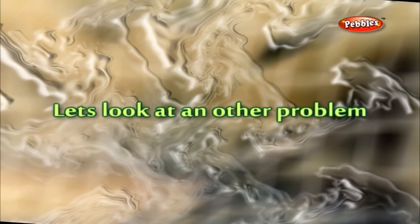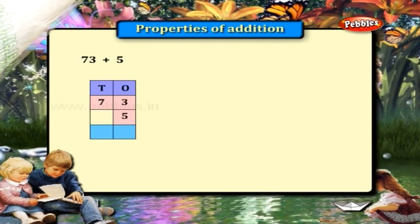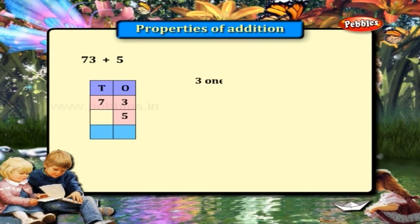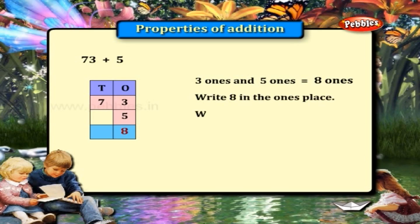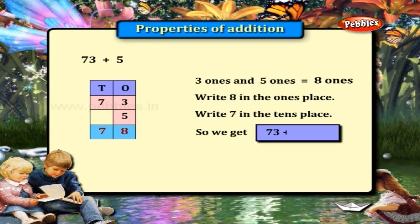Let's look at another problem. 73 plus 5. Now 3 and 5 are in the ones place, so 3 plus 5 is equal to 8. Write 8 in the ones place and write 7 in the tens place. We get the answer 73 plus 5 is equal to 78.